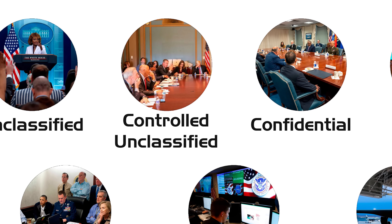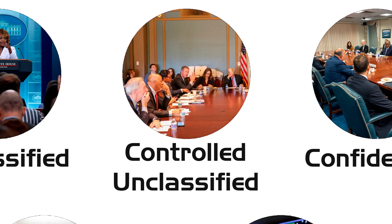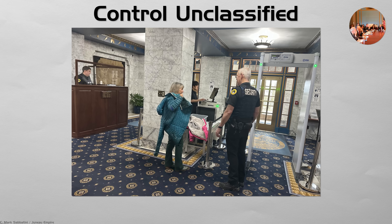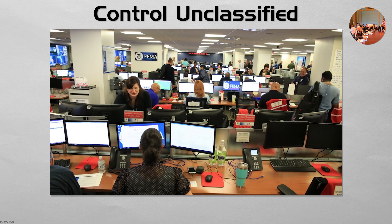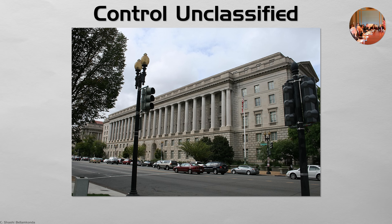Controlled Unclassified Information is a crucial but often misunderstood category, representing the first major step up in information protection. This is data that the government must protect, but it is not a national security secret. Instead, it is sensitive for other important reasons.